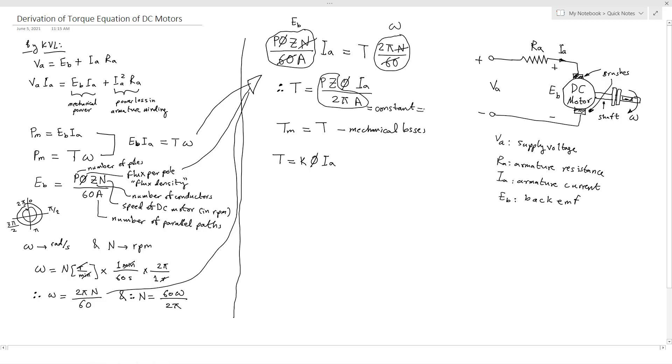So this K is constant for a particular machine, and therefore the torque of DC motor varies with only flux and armature current. So this is one of the most important equations used in DC motors.